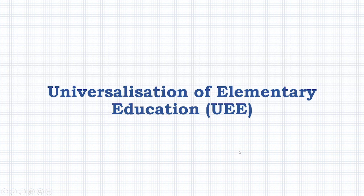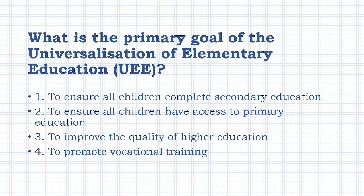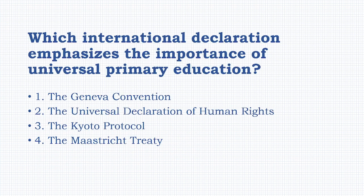In this video, we are going to discuss some MCQs related to Universalization of Elementary Education (UEE). The first MCQ is: What is the primary goal of Universalization of Elementary Education? Options: to ensure all children complete secondary education, to ensure all children have access to primary education, to improve the quality of higher education, to promote vocational training. The answer is option B: to ensure all children have access to primary education.